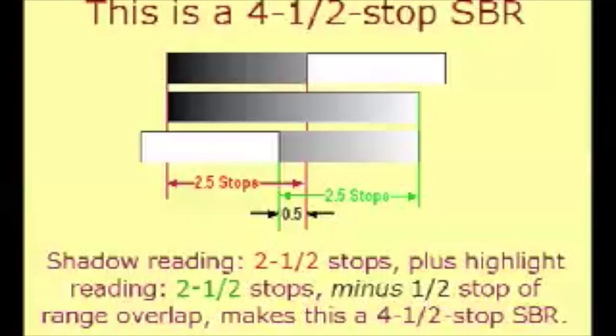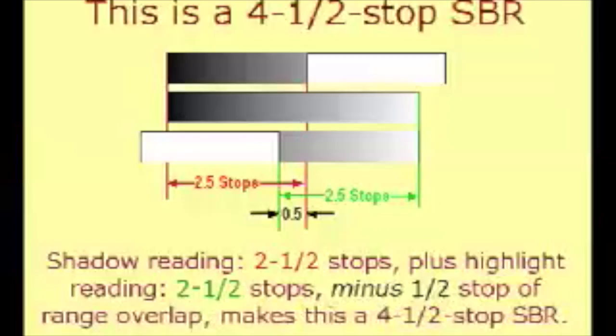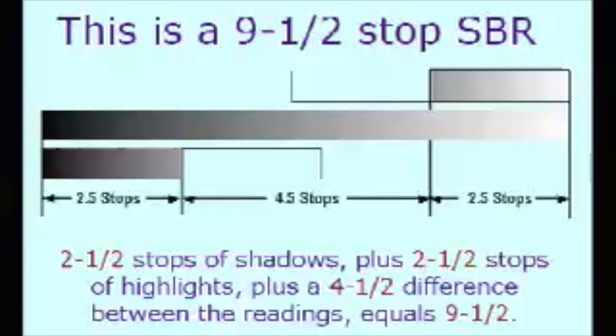In practice, the ExpoDev program used in incident mode will accept high readings that are as much as two stops lower than the low readings. This arbitrary range adjustment is strong medicine that can be used creatively, but use it cautiously. Very few film-developer combinations are capable of producing such extremes of image contrast.